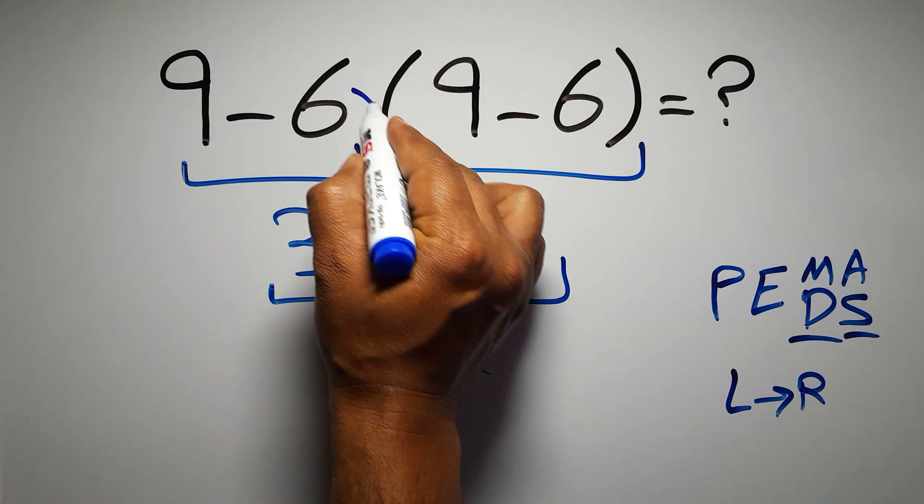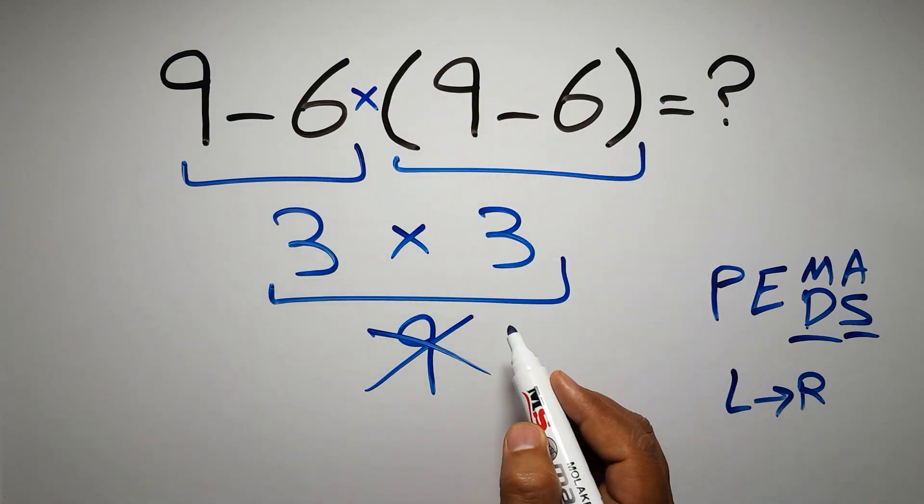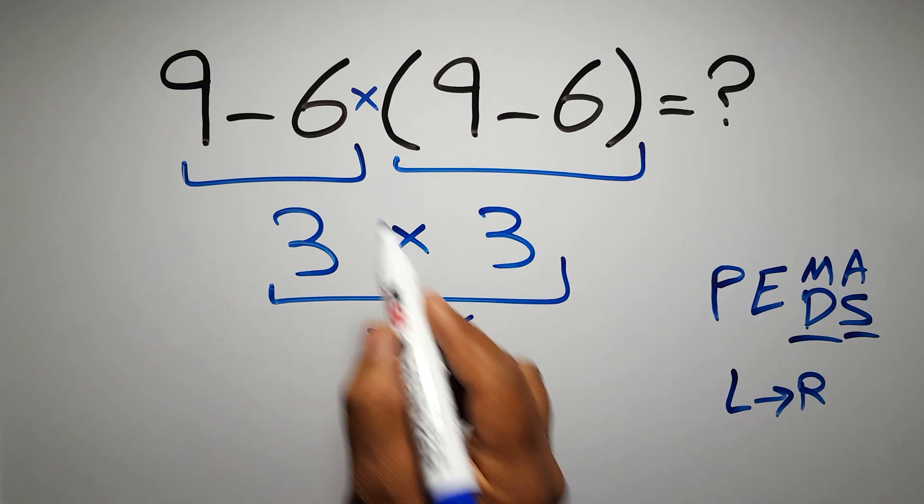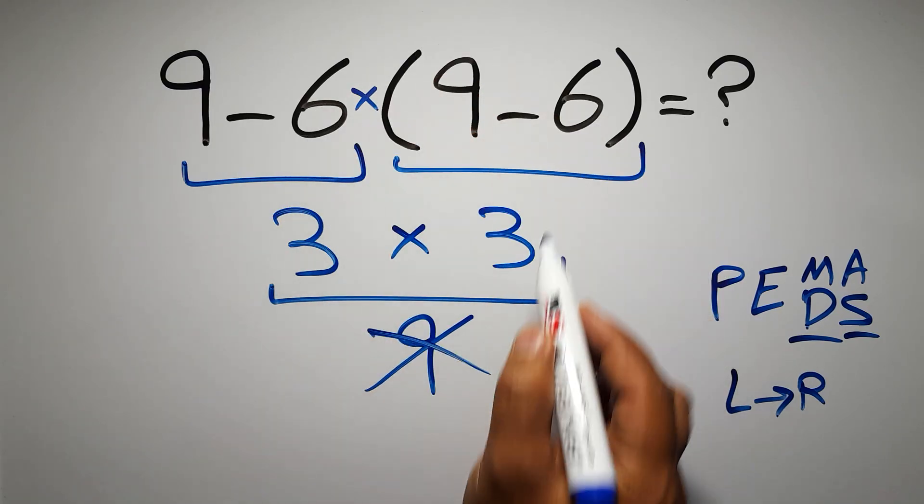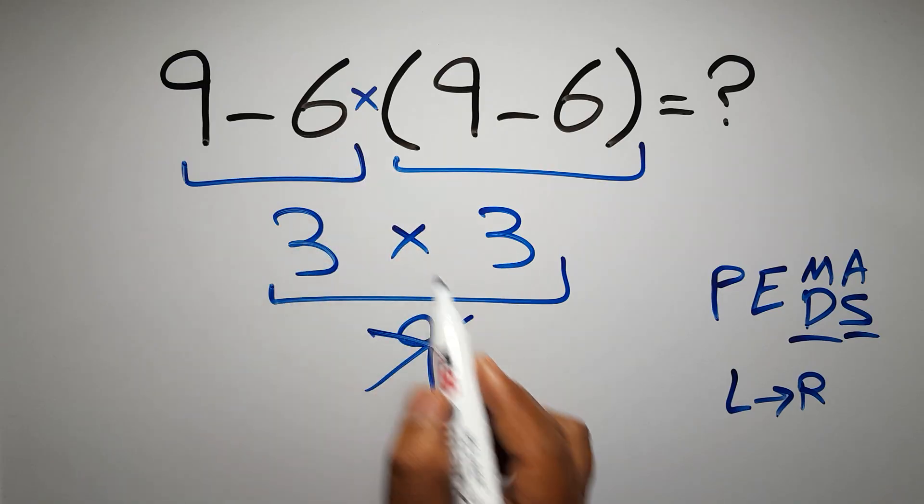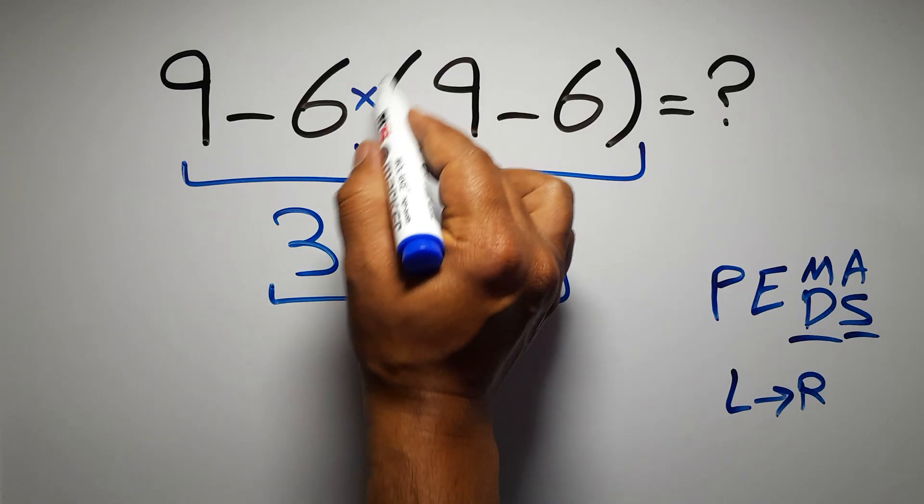In this expression we have one subtraction, one multiplication, and one parentheses. We have here a multiplication because in mathematics when a number is placed next to parentheses it means multiplication, and we usually don't write the multiplication sign for brevity.